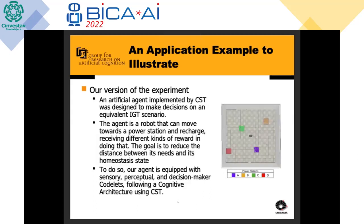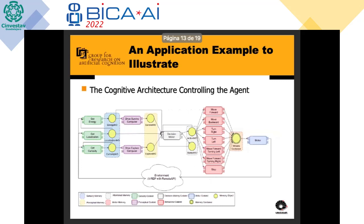Our version of the experiment does not use physical decks; instead, we created an artificial agent implemented in CST with a virtual scenario where a robot can move around and reach different points to get energy. The agent is a robot that can move toward a power station and recharge, receiving different kinds of reward. The goal is to reduce the distance between its needs and its homeostasis states. The agent is equipped with sensory, perceptual, and decision-maker codelets following a cognitive architecture built with CST.